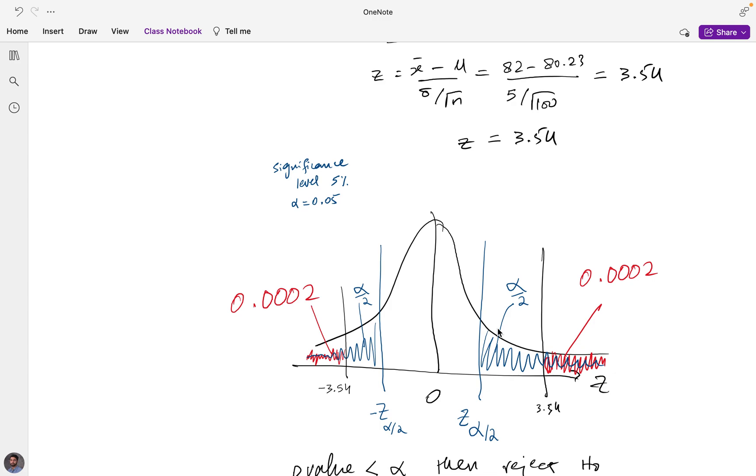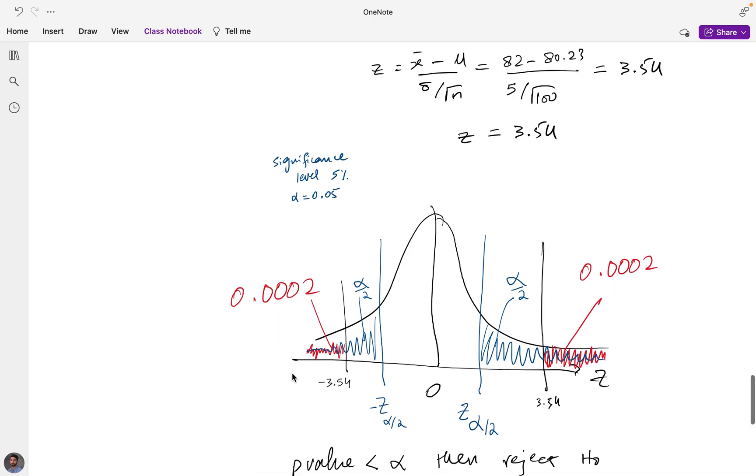The p-value now is not just 0.0002. The p-value now is the sum of both of these 0.0002, or we could say it just gets multiplied by two. So the p-value for a two-tailed test is twice that of a one-tailed test and is now 0.0004.